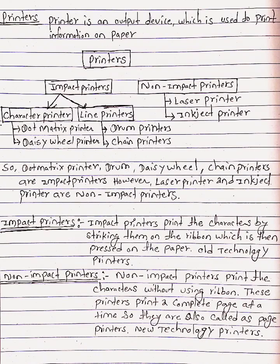A printer is an output device which is used to print information on paper. Printers are mainly divided into two parts: impact printers and non-impact printers. Impact printers are further divided into two parts: character printers and line printers.